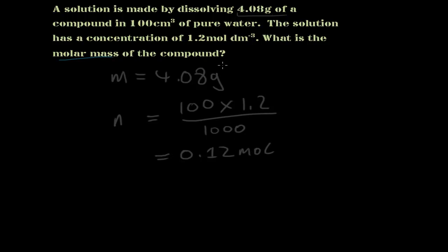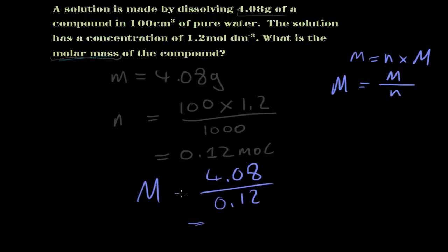Okay, so we're trying to find out the molar mass. And now we can use this mass and the number of moles. So all we need to do now is divide. Because if we rearrange the equation that m equals n times big M, big M equals the mass divided by the number of moles. So big M here is going to be 4.08 divided by 0.12. Let's find out what this is. 4.08 divided by 0.12 equals 34, and that's going to be in grams per mole.